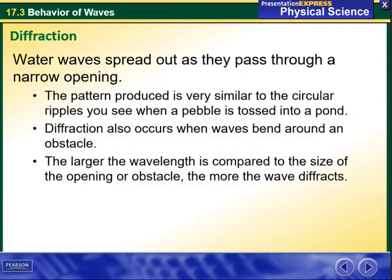Water waves spread out as they pass through a narrow opening. The pattern produced is very similar to the circular ripples you see when a pebble is tossed into a pond. Diffraction also occurs when waves bend around an obstacle. The larger the wavelength is compared to the size of the opening or obstacle, the more the wave diffracts.